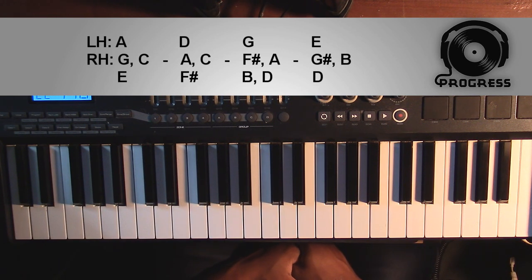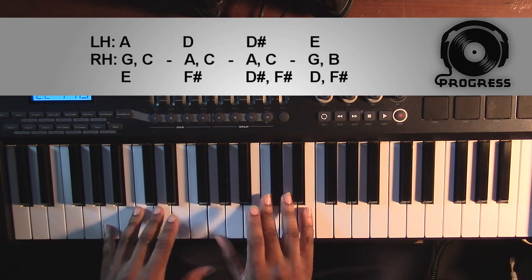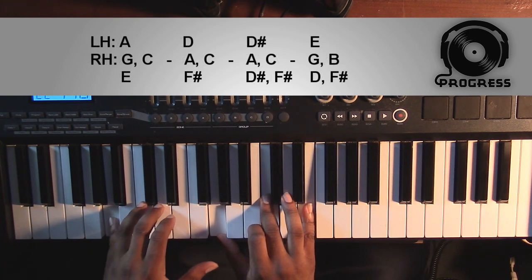To start off with the second set, the first two chords are going to be the same as the first set, so we're going to have the A minor seven going to the D7.